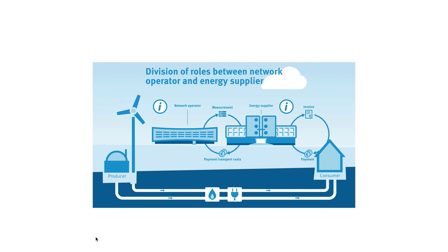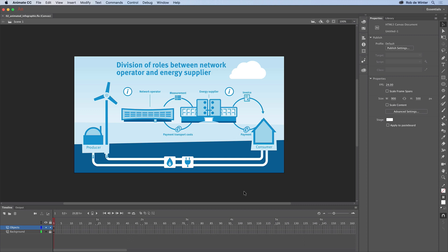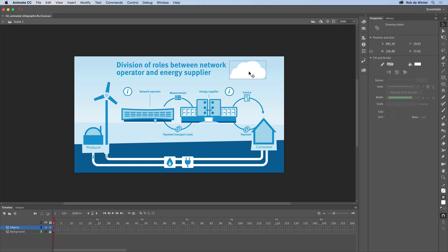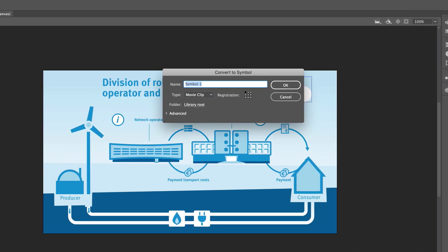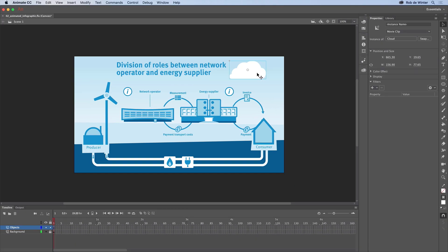This is the second video in a series of five in which you will learn how to make this animated and interactive infographic with Adobe Animate and Adobe Illustrator CC. In the previous video we imported an Adobe Illustrator file into Adobe Animate. In this video you'll make your first object move. We'll first start with this cloud. We're going to animate it in a continuing loop from the left to the right of the stage. It's very important to convert the cloud to a symbol first. Make sure you've selected the selection tool, select the cloud on the stage, right click and choose Convert to Symbol. I'll name the symbol Cloud and click OK. Now we've got a symbol, we can start animating it.